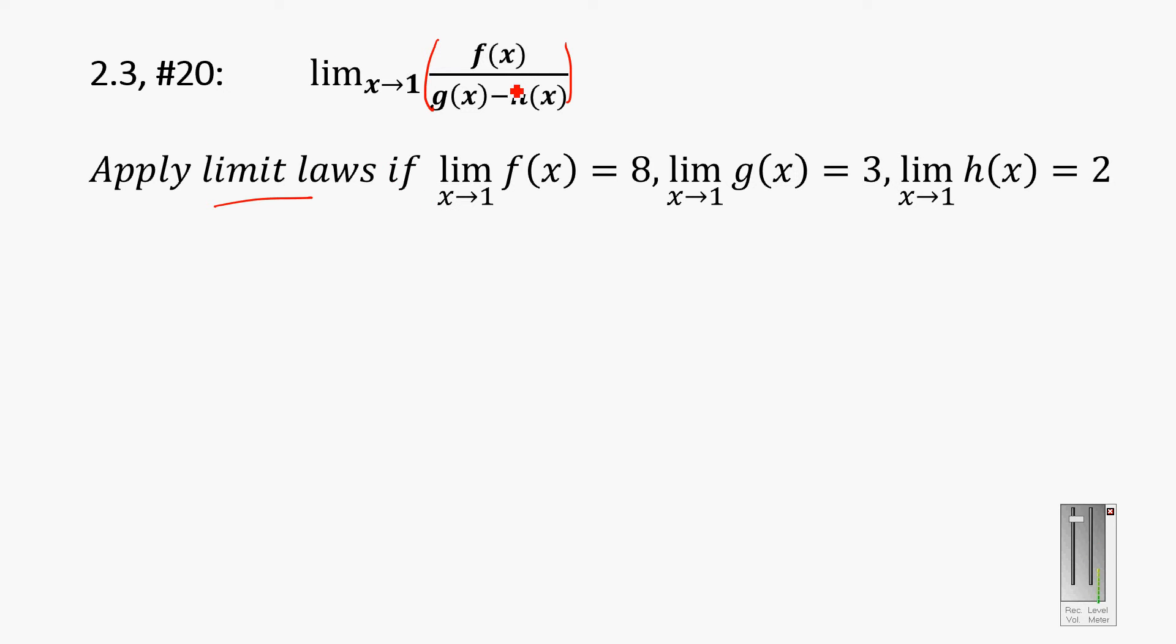So the first thing I'm going to do is I'm going to say there's a quotient law. And I believe if you look back at your textbook, I believe that's law 5 is the quotient law. And the quotient law says that if you have the limit of some f of x over some other function, then you can apply that to the top and the bottom. So really what we have up here is actually equal to the limit as x goes to 1 of f of x over the limit as x goes to 1 of g of x minus h of x.